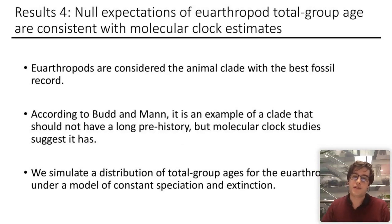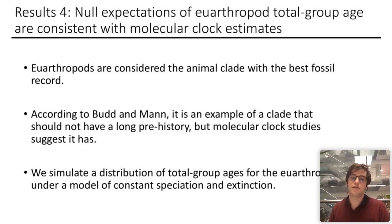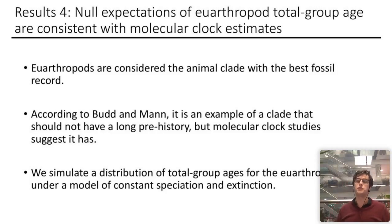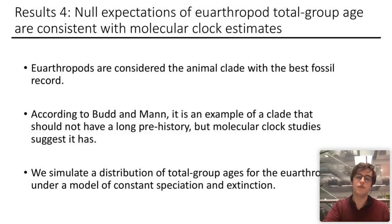To bring in some empirical data, we wanted to model a situation analogous to the evolution of euarthropods. We chose this because they're considered an animal clade with a fantastic fossil record, and according to the thesis of Bud and Mann, it is a clade that shouldn't have a long prehistory given the presence of stem group fossils — but many molecular clock studies suggest that it does. So we simulated total group ages for euarthropods in the same way as previously.